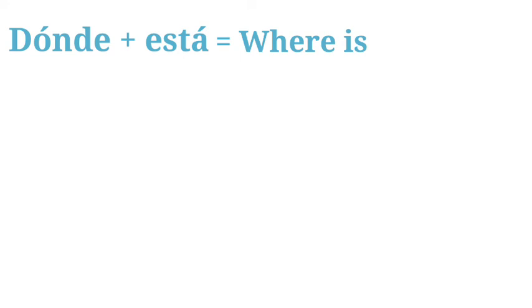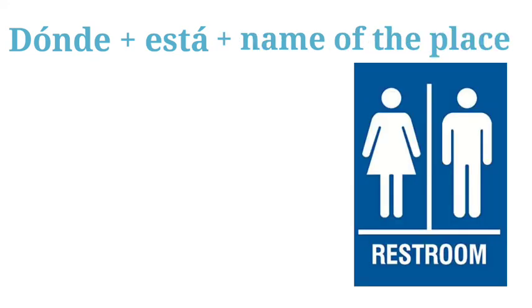The next word is 'dónde,' which means 'where.' I've prepared a list of sentences using the structure of 'dónde.' It's used with 'está' to ask where something is. When we want to ask about the location of something, we start with 'dónde,' then add 'está,' then add the name of the place.